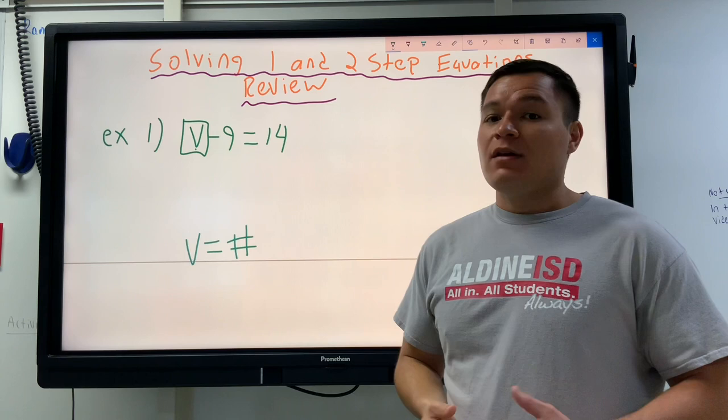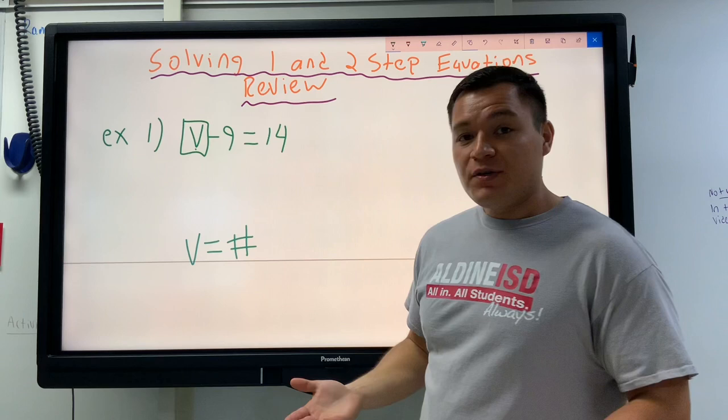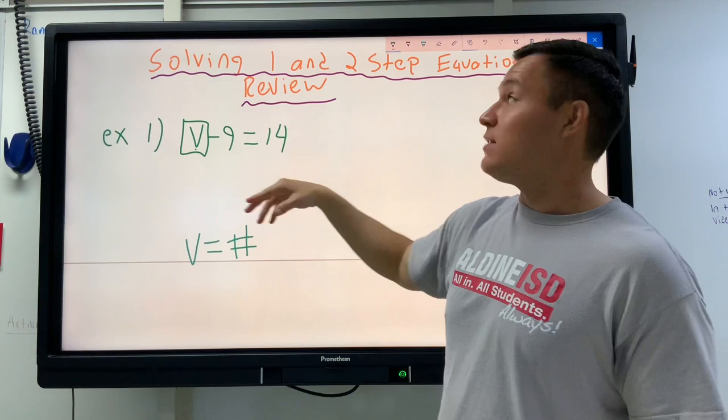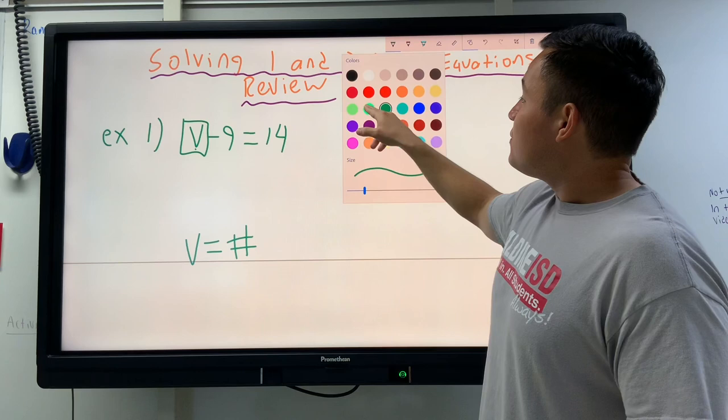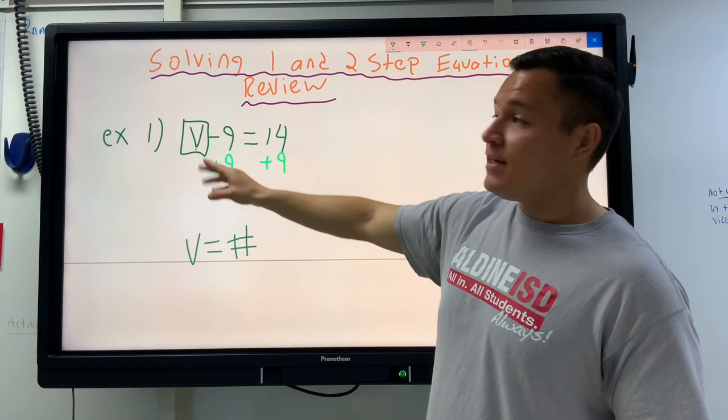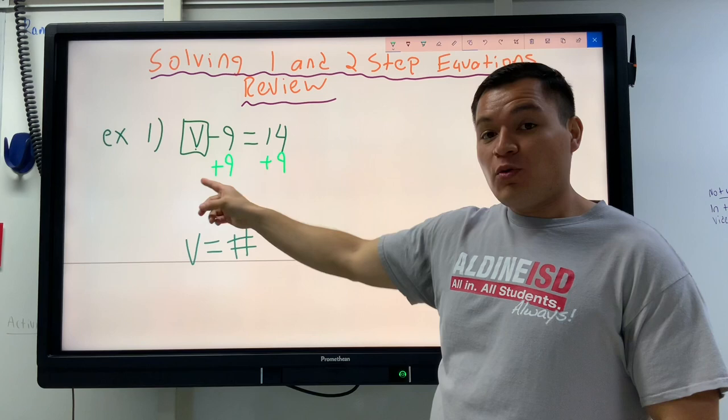But I don't like using the word inverse operations. I like to just think I'm going to undo whatever I see. So right now I have the letter V and what's happening to it is it's being subtracted by nine. So how you get rid of that minus nine is you do the opposite of it. We are going to add nine to both sides. We have to keep it equal.